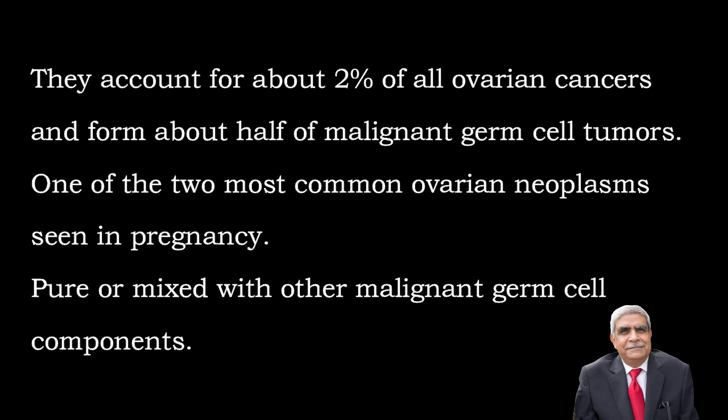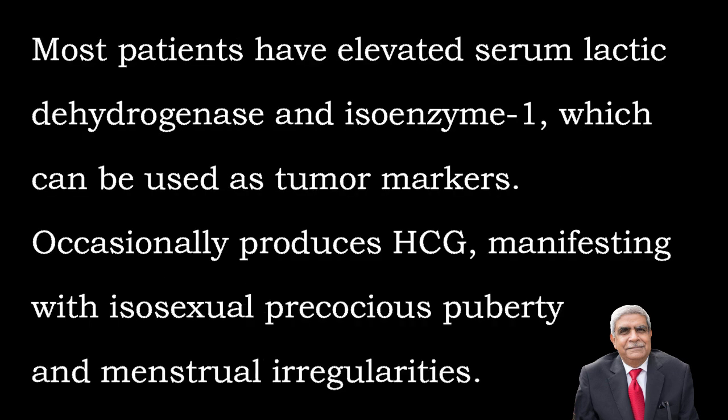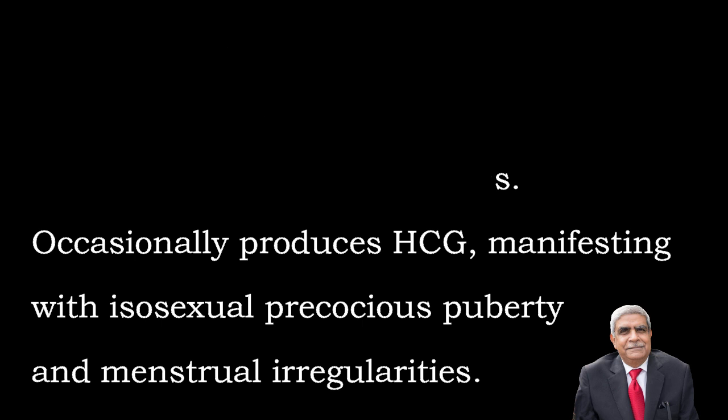Dysgerminoma forms about half of malignant germ cell tumors and is one of the most common ovarian neoplasms seen in pregnancy, pure or mixed with other malignant germ cell components. Most patients have elevated serum lactic dehydrogenase and isoenzyme 1, which may be used as a tumor marker. Occasionally some tumors produce HCG, manifesting with iso-sexual precocious puberty and menstrual irregularities.